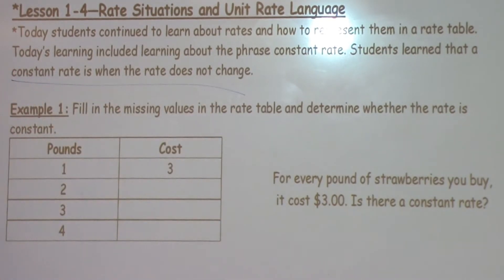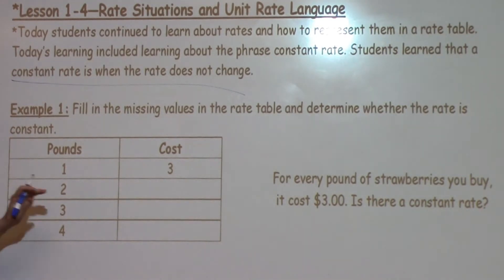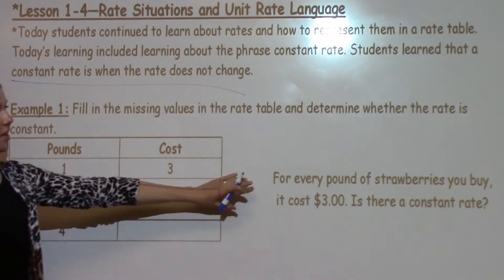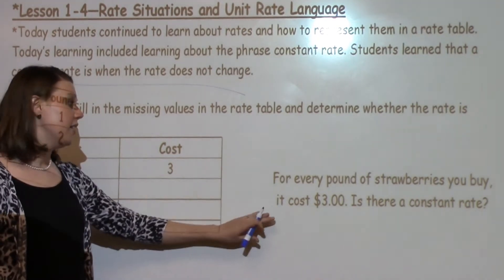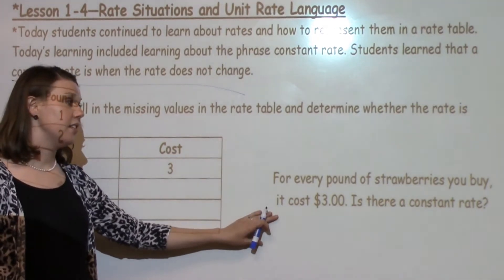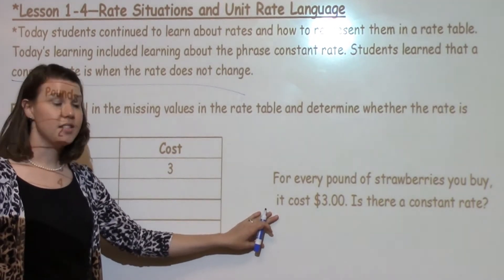For example number one, fill in the missing values of the rate table and determine if the rate is constant. Our question says: for every pound of strawberries you buy, the cost is $3. Is there a constant rate?